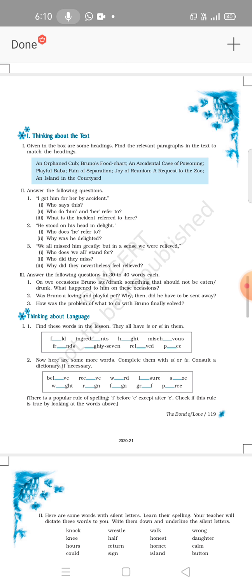Question number two: Was Bruno a loving and playful pet? Why then did he have to be sent away? Yes, Bruno was a loving and playful pet. He did a few tricks. He would whistle or box and tumble. He would hold gun in a form of a stick and point at a person. So it was difficult to keep him at home, therefore he had to be sent away.